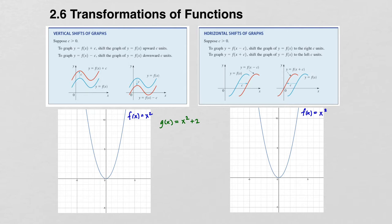So the point at (0, 0) moves up to (0, 2). The point at (1, 1) moves up 2 to the point (1, 3). Likewise on the other side. We can do this with every point on the curve, and what you get is a vertical translation of that graph.